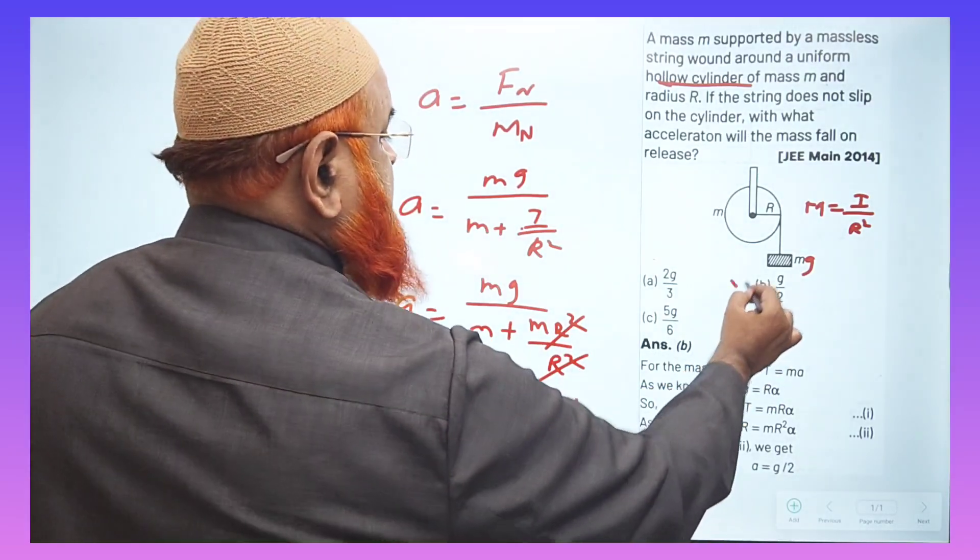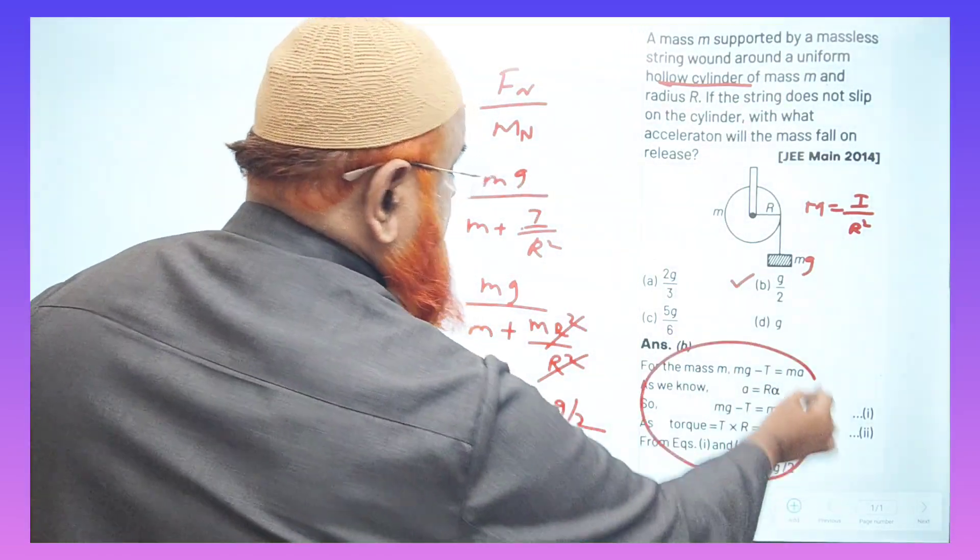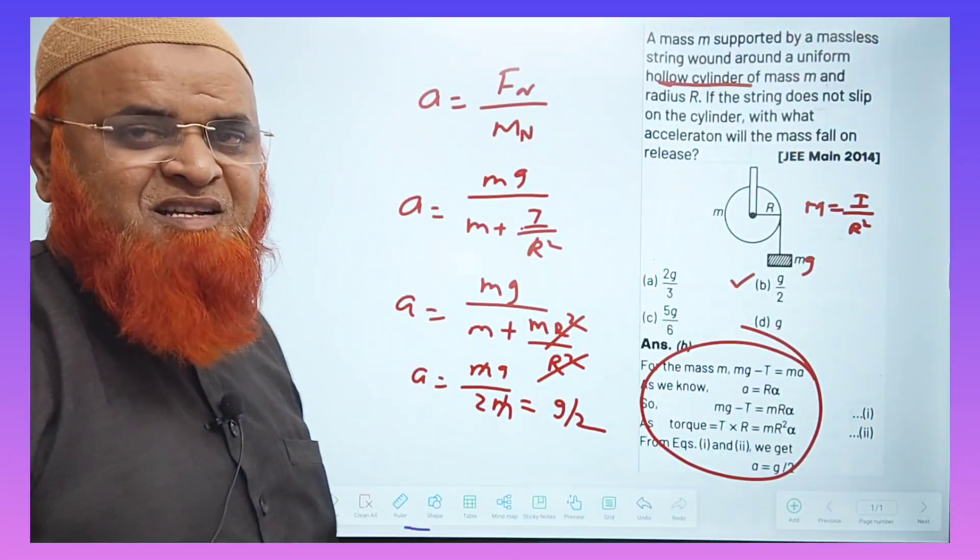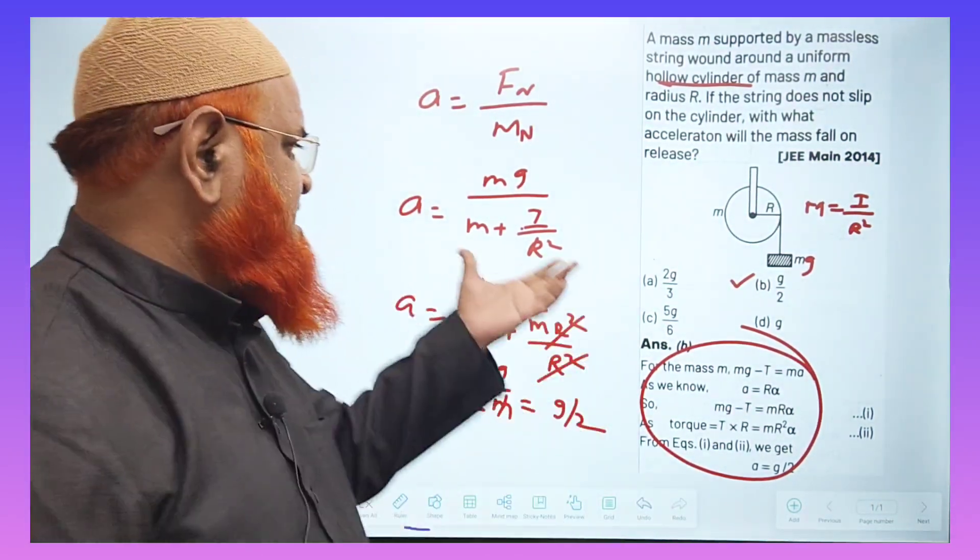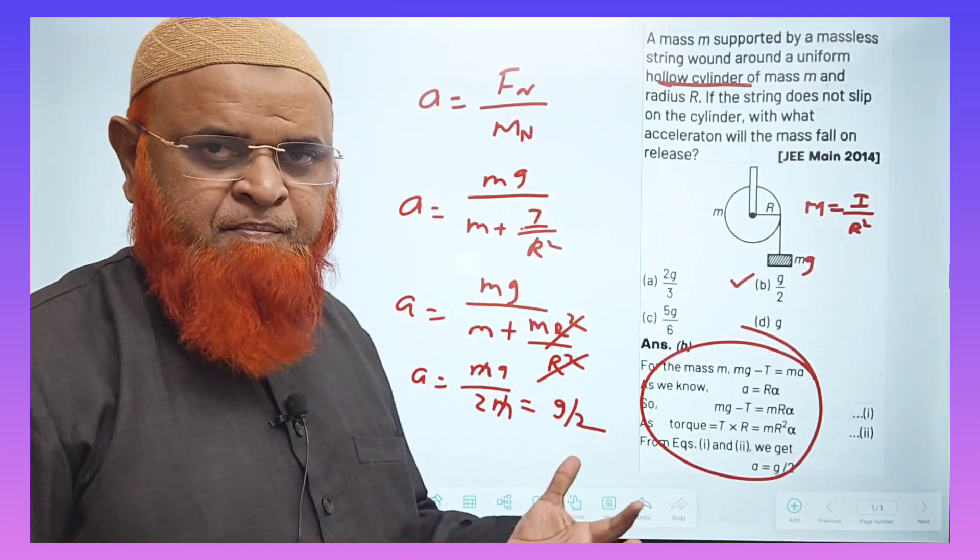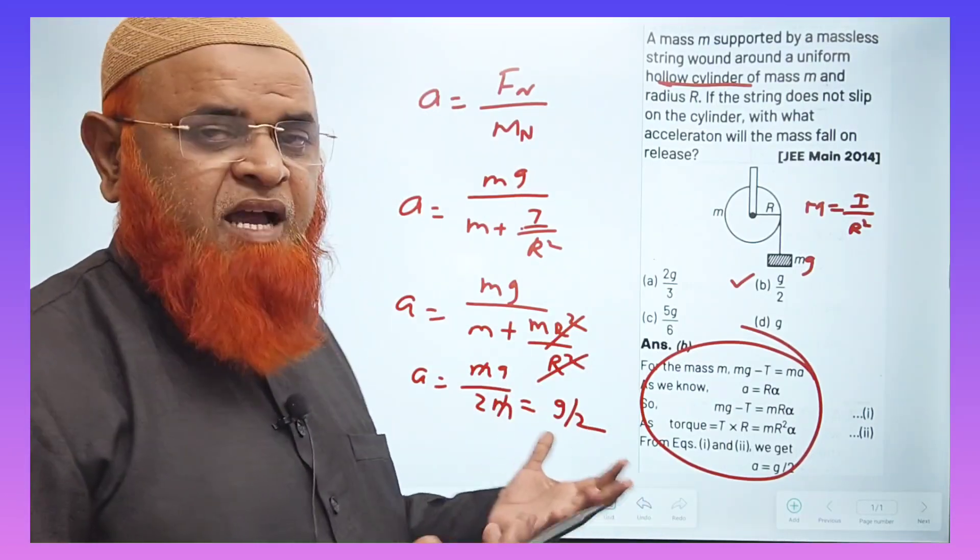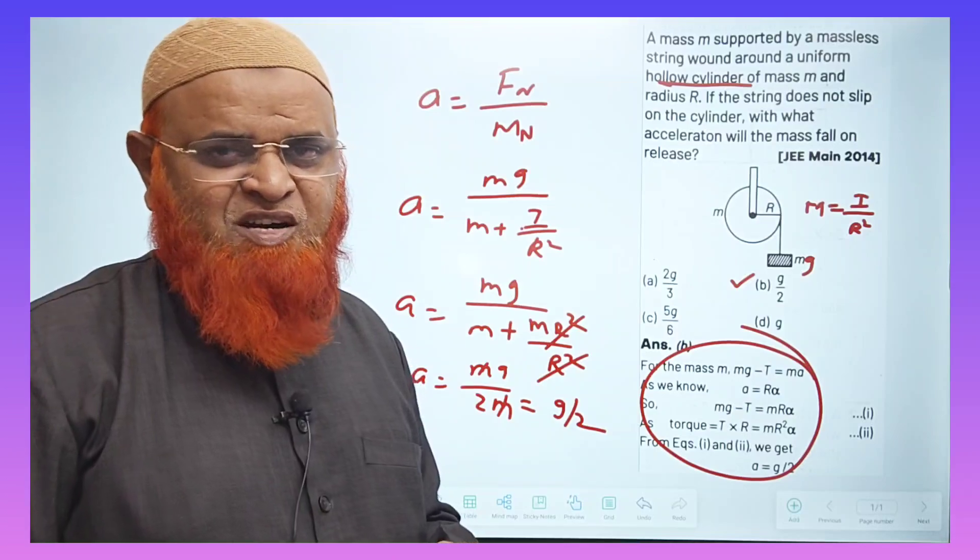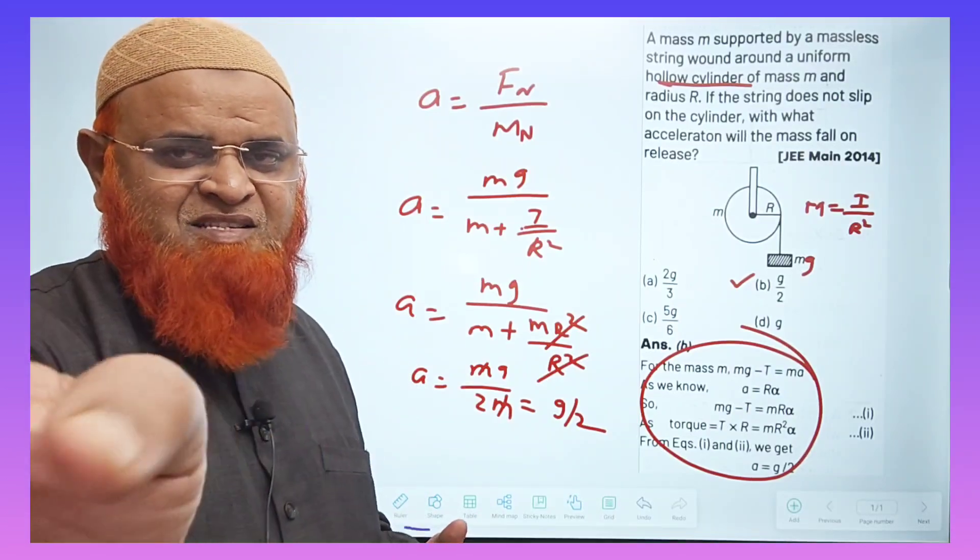Therefore, this is the correct option. You can bypass all these equations and just follow a simple shortcut method. That is a is equal to Mg by M plus I by R square. That's it. Hope you have enjoyed this method. Thank you very much. Have a nice day.